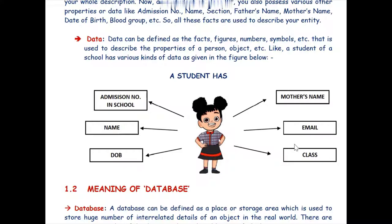The admission number of a student is an integer or number value. The name field contains characters or strings. Date of birth consists of numbers as well as special characters. Mother's name, email, and class also contain various types of numbers, characters, and symbols. So data describes any real-world practical entity, but in itself it does not hold any meaning.